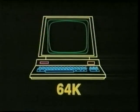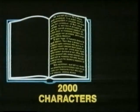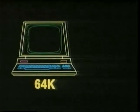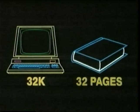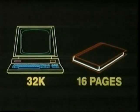This may sound a lot, but it isn't. The average page of a book contains about 2,000 characters — it's a 2K page. So even a 64K computer can only store as many characters as a 32-page book, and a 32K computer only as many as a 16-page book.